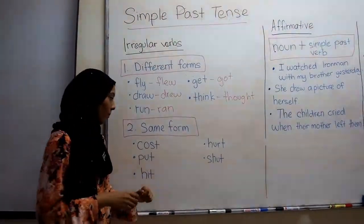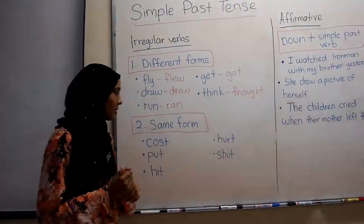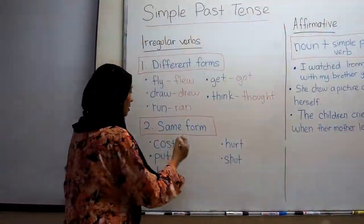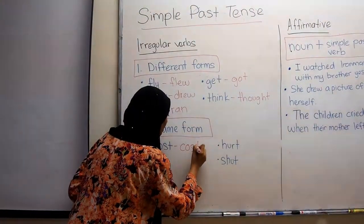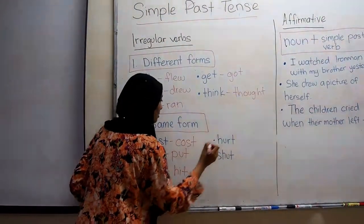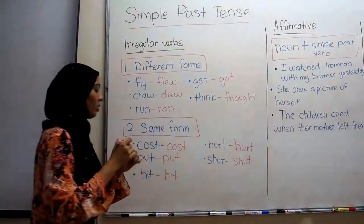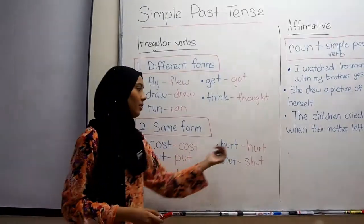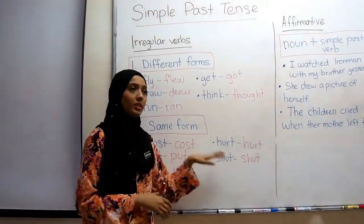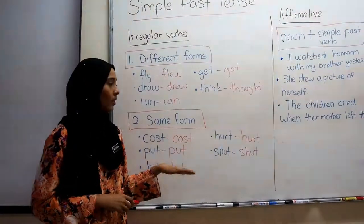The second form for irregular verbs is the same form. Certain irregular verbs take the same form whether they are in simple present or simple past. For example: cost is still cost, put is still put, hit is still hit, hurt is still hurt, and shut is still shut. Again, there are no rules — you have to memorize which irregular verbs keep the same form.